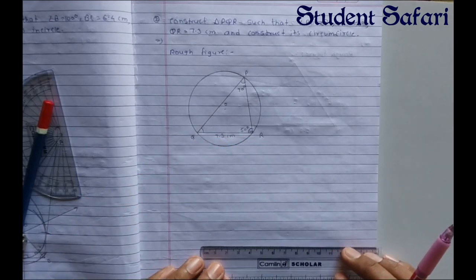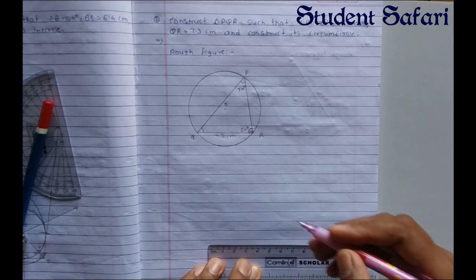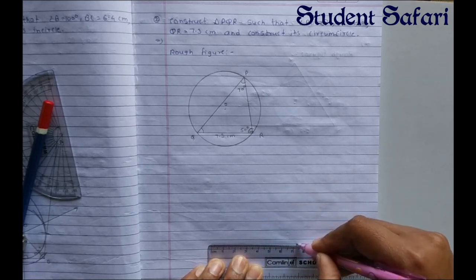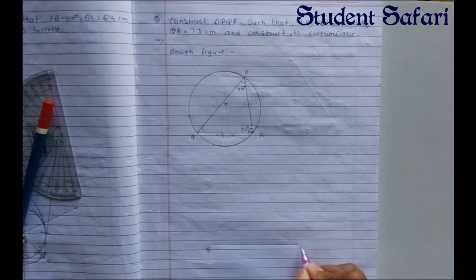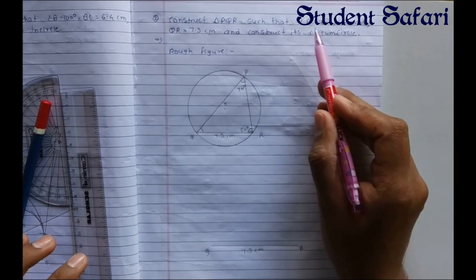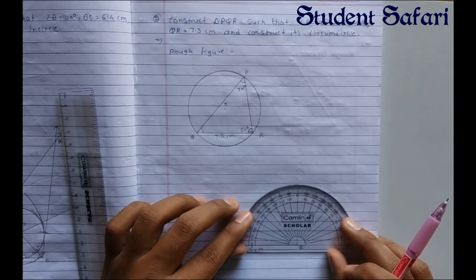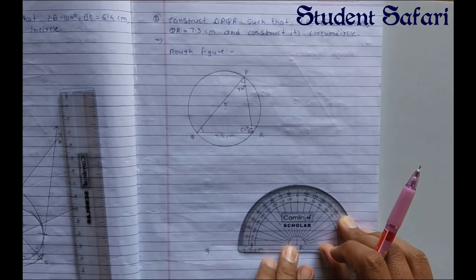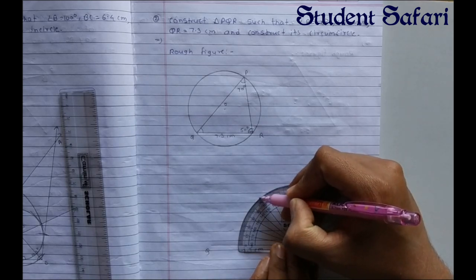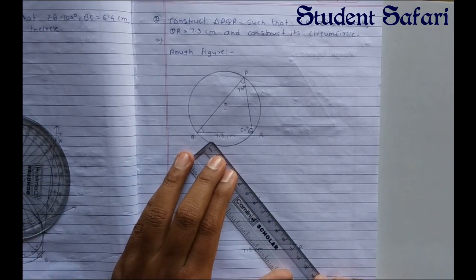First draw the triangle: the measurement of QR is 7.3 centimeters, so draw line QR as 7.3 centimeters. Then we have the measurement of angle R which is 50 degrees. Place the protractor on point R and measure up to 50 degrees — 10, 20, 30, 40, 50. After joining these two points we get angle R as 50 degrees.